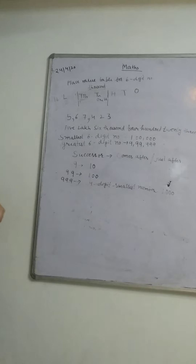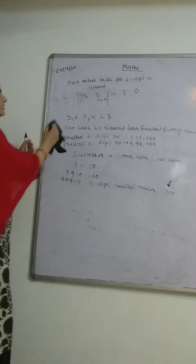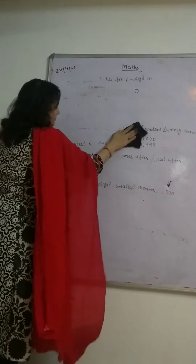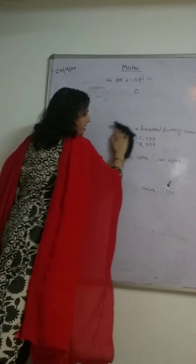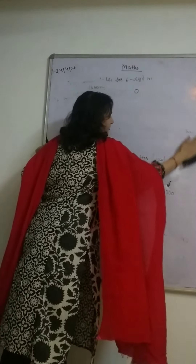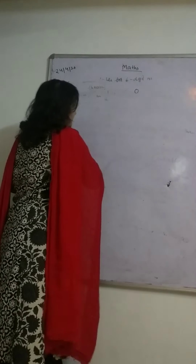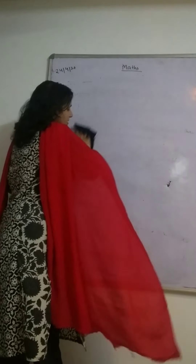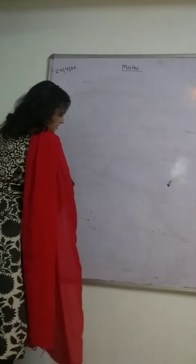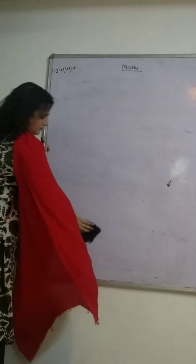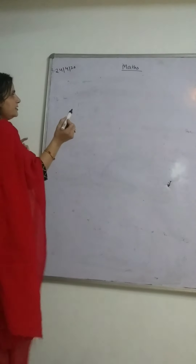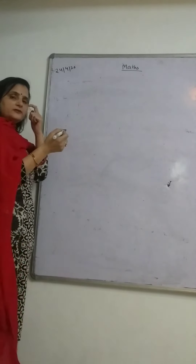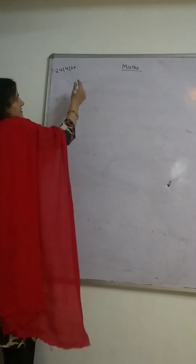We have studied how to read 5-digit and 6-digit numbers. Just remember: commas are placed from right to left. Count 3 places from the right and put the comma, then count 2 more places and put the next comma. This comma separates the number into periods.